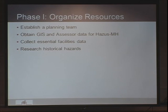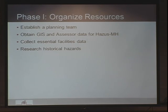When organizing resources, it's essential that we get the local community stakeholders involved in the process. They have the best data and the best information, so they're the core of the planning team. They provide us with GIS and assessor data, which helps to feed Hazus. We collect essential facilities data — schools, fire stations, police stations, emergency operation centers, care facilities, hospitals, nursing homes. They can also identify critical facilities, which are more user-defined and vary from county to county. And then we research historical hazards by looking at old newspapers, the National Climatic Data Center, and old county plans.